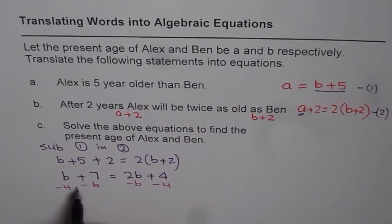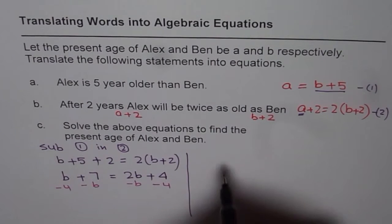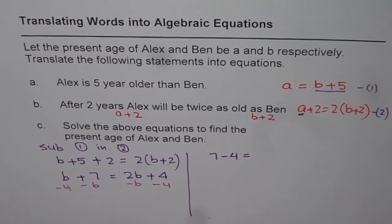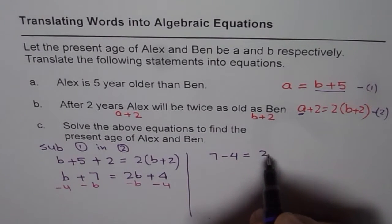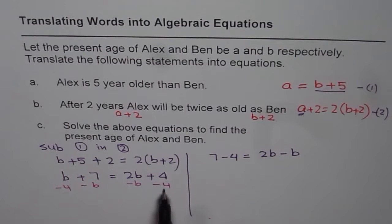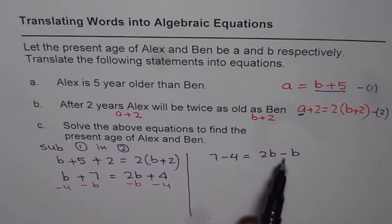So if I take away 4, let me write down this equation here. I get 7 minus 4 equals to 2B minus B. 4 minus 4 is 0, and B minus B is 0. So we are left with 7 minus 4 equals to 2B minus B.